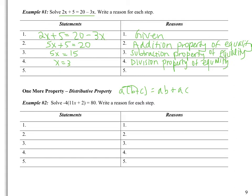We're going to use that directly in example 2. Remember that your statement always starts out with the equation. So: negative 4 times the quantity 11X plus 2 equals 80. This is given. Because we just learned about the distributive property, I'm going to distribute that negative 4. I get negative 44X minus 8 equals 80. And that's the distributive property.